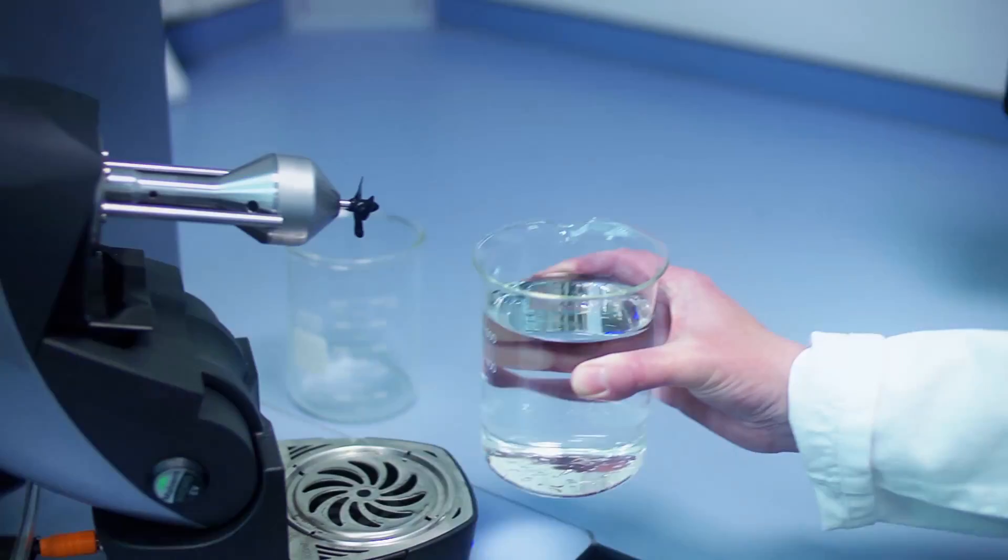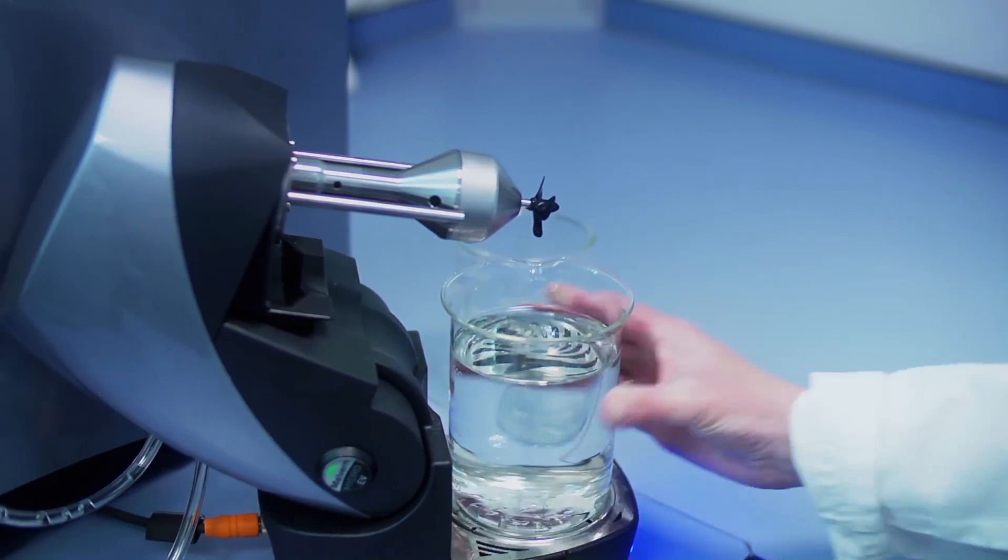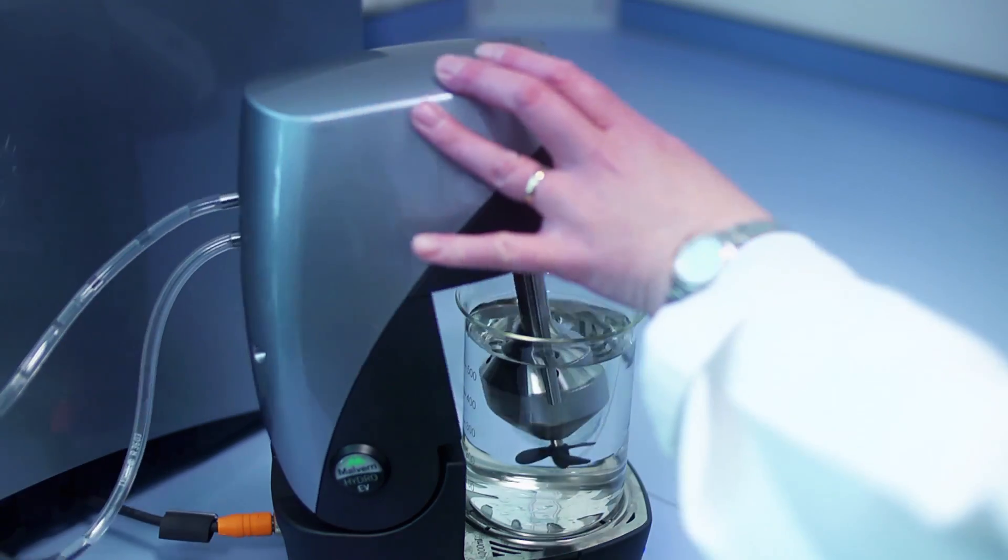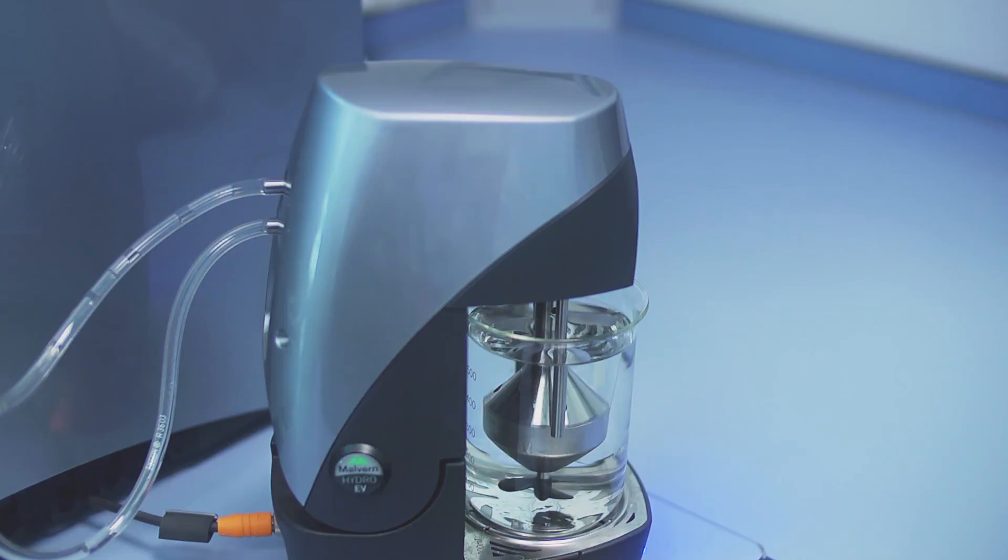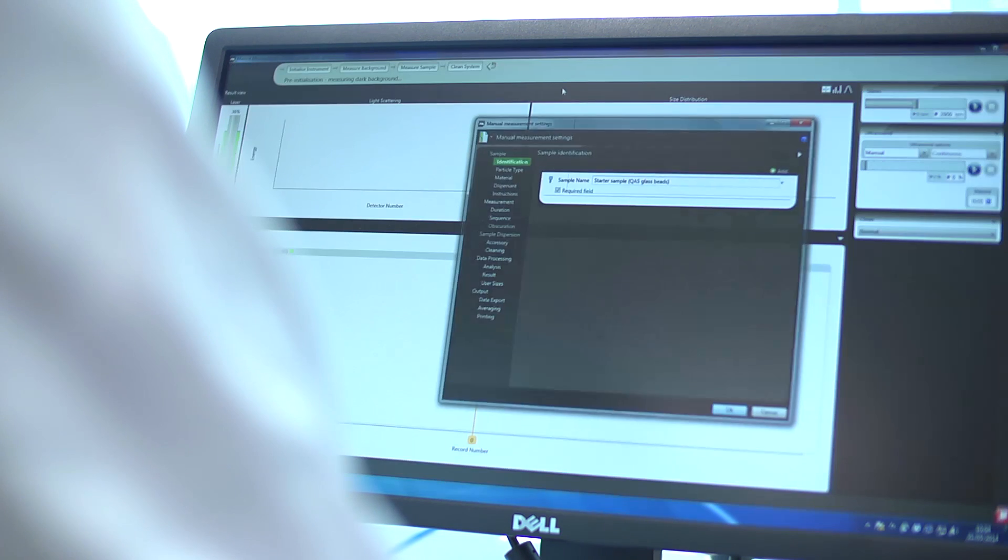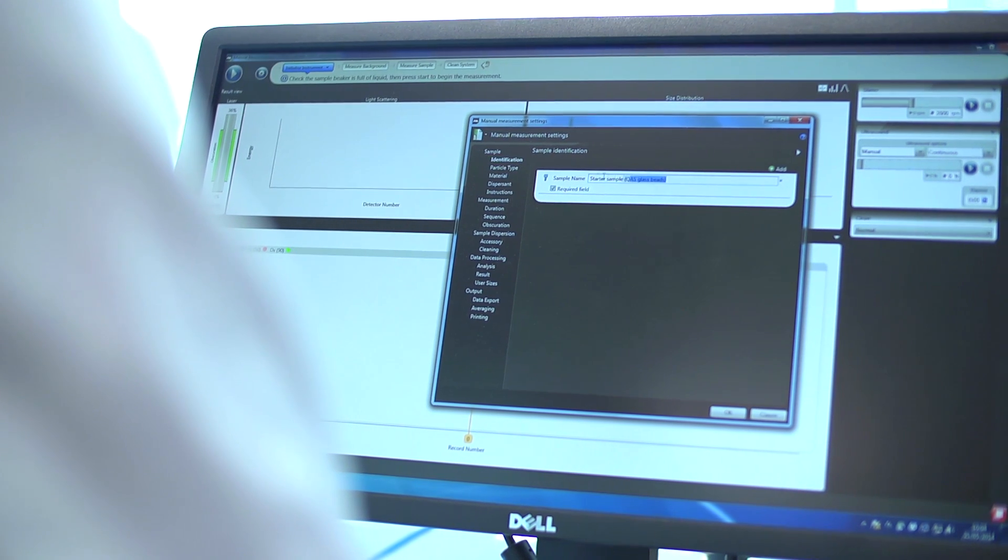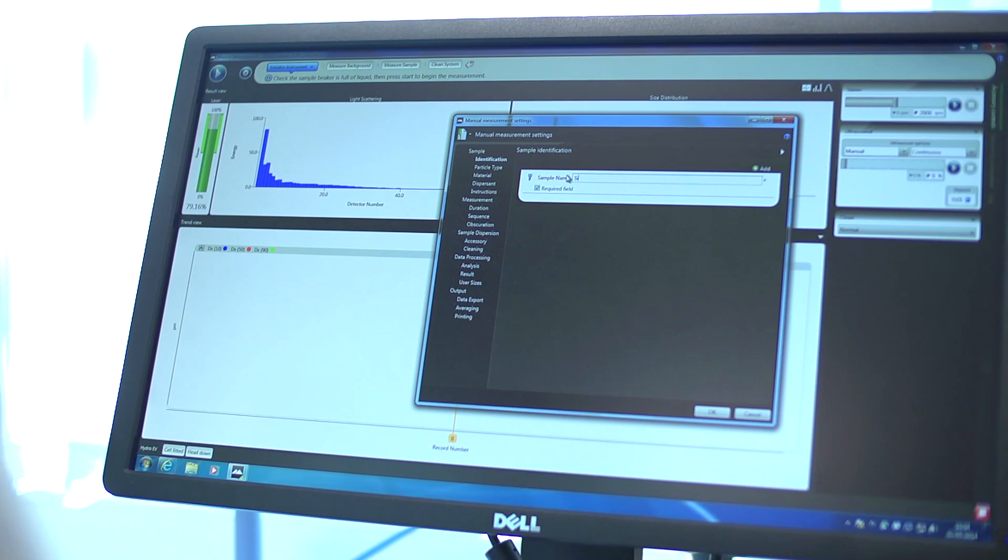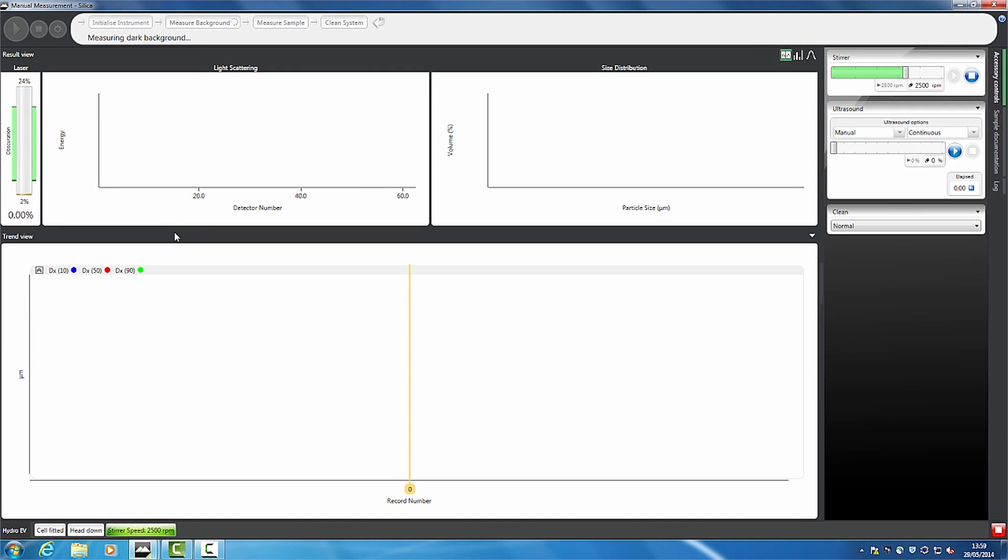The Master Sizer 3000 system and its software has been designed to make method development easier. During method development, the Master Sizer 3000 measurement manager provides a view of everything you need to understand and optimize the measurement process. This includes controls for the dispersion unit, live reporting of the data being collected by the system, trending of the results, and a simple view of where you are in the measurement process.